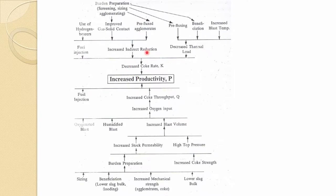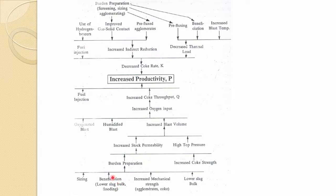On the other side is the Q factor — coke throughput. If we can increase Q, our productivity naturally increases. Q is affected by sizing, beneficiation, mechanical strength, and lower slag volume. Sizing and beneficiation are very important because if taken care of at this stage, slag volume can be reduced — less silica or lime is needed. Reducing slag volume also lowers the chance of flooding, allowing more blast to be blown into the furnace.